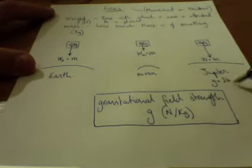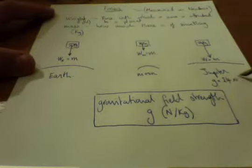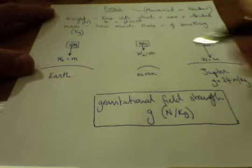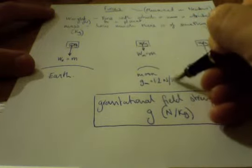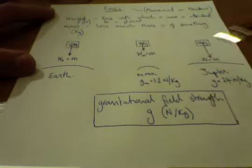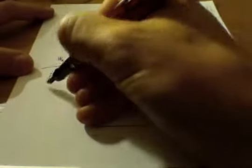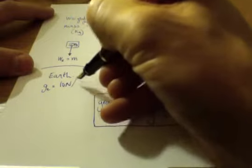On Jupiter, we're running 24 newtons per kilogram. It's quite strong. On the Moon, it's only 1.2 newtons per kilogram. Whereas on Earth, it's approximately as good as 10 newtons per kilogram.